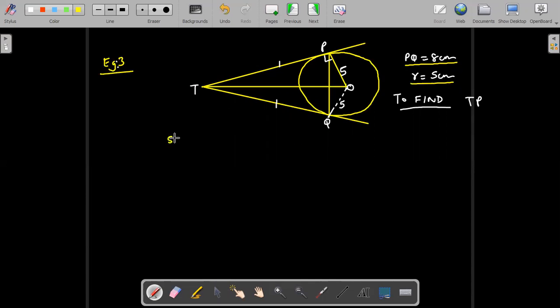Again, the easiest way to do is like this. If you look at this figure, TP and TQ are equal because they are tangents, right? Tangents from same external point to circle are equal and OP is equal to OQ because they are radius of the same circle. So therefore what is the conclusion?